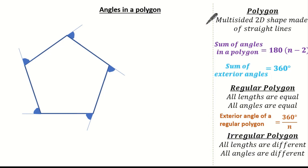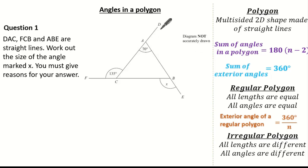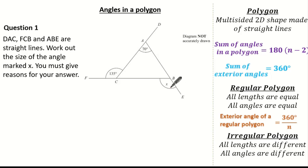This is the key information needed to tackle any exam question regarding angles in a polygon. So let's have a look at a past exam question. The question states that D to A to C is a straight line, F to C to B is a straight line, and A to B to E is a straight line. We're asked to work out angle X and must give reasons for our answer.